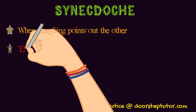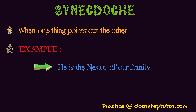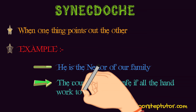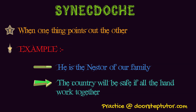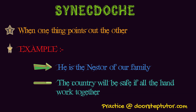Examples will make it clear. First: 'He is the Nestor of the village.' What Nestor means here is the oldest man — so he is the oldest man of the village. Another example: 'The country will be safe if all the hands walk together.' Here, hands means the people who will work with unity — it represents the hands of the people. So when a part stands for the whole, then it is known as synecdoche.